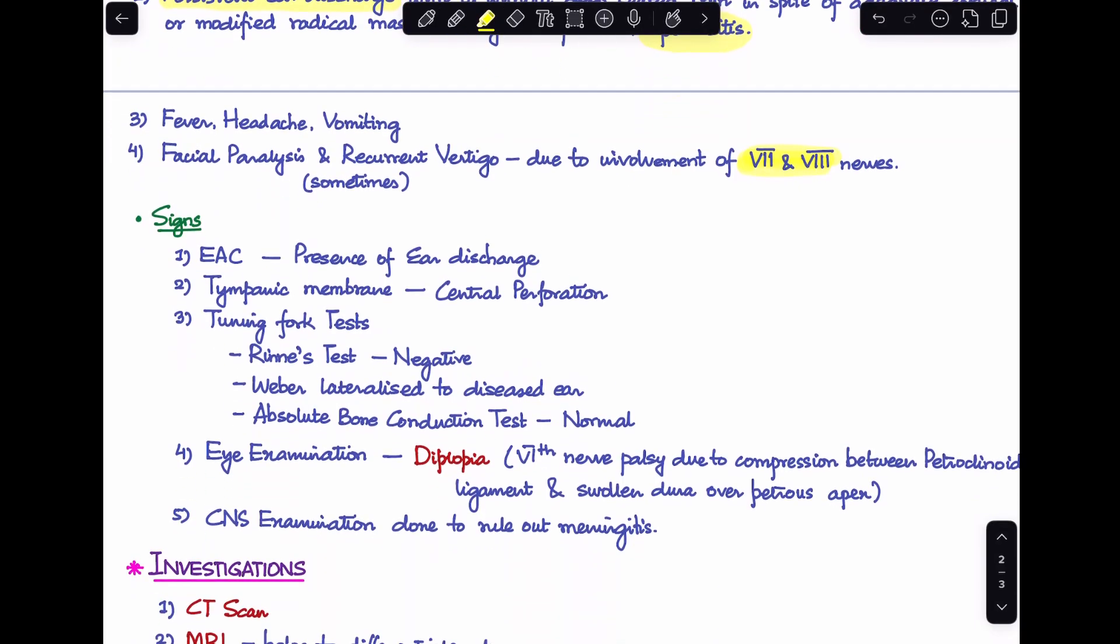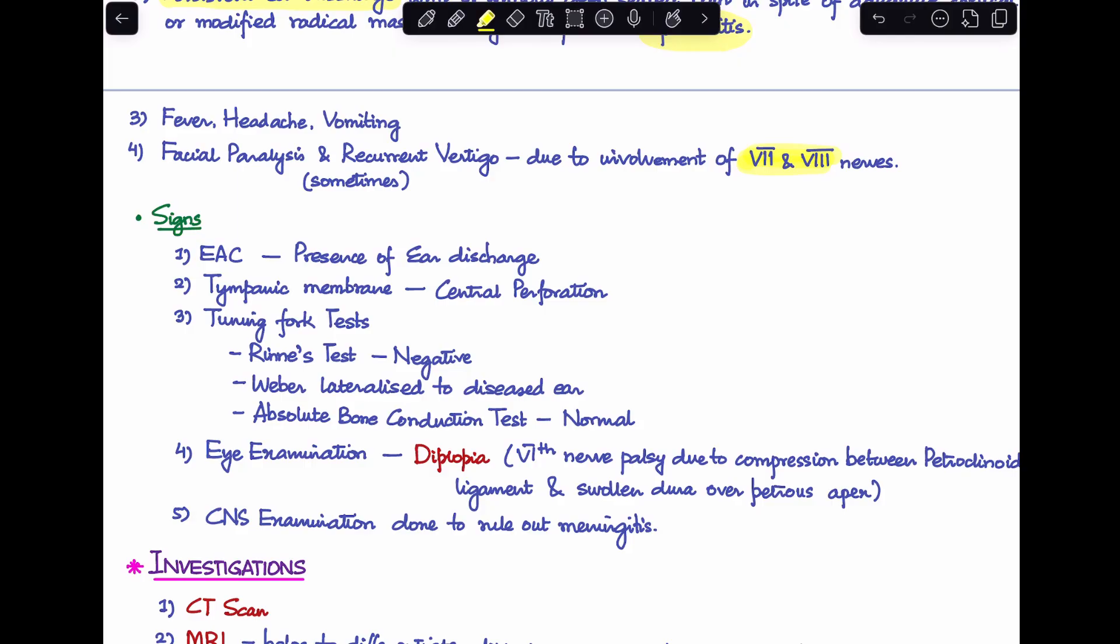Next, let's talk about the signs. In external auditory canal we'll see the presence of ear discharge. Tympanic membrane will have a central perforation. Tuning fork tests will be typical of a conductive hearing loss where Rinne's will be negative, Weber will be lateralized to the diseased ear, and absolute bone conduction test will be normal. On performing an eye examination, we'll note diplopia on lateral gaze. Last of all, CNS examination should also be done to rule out any further complication of petrositis like meningitis.